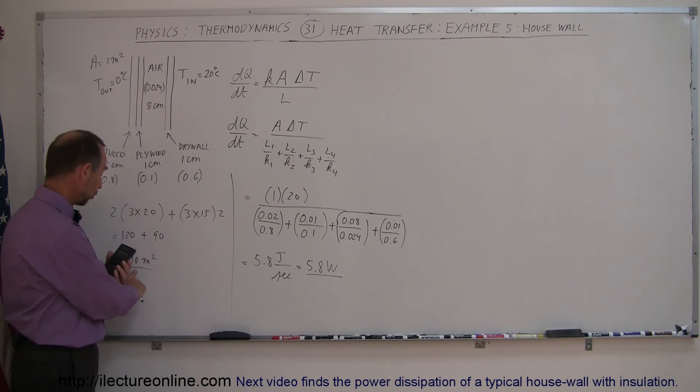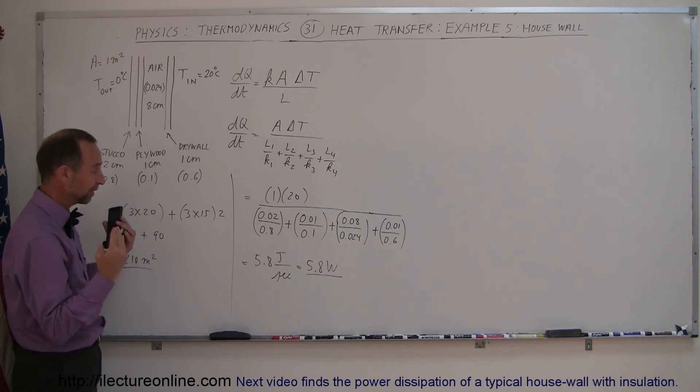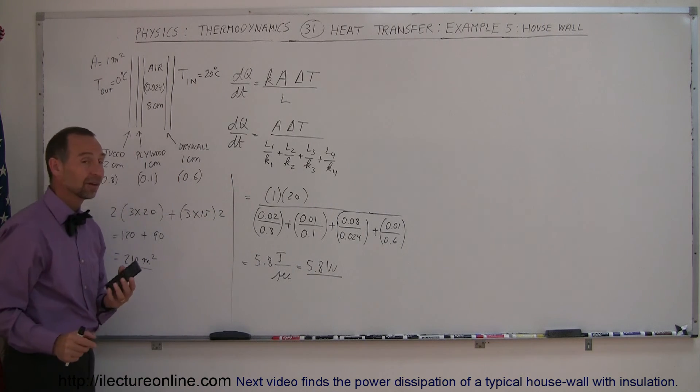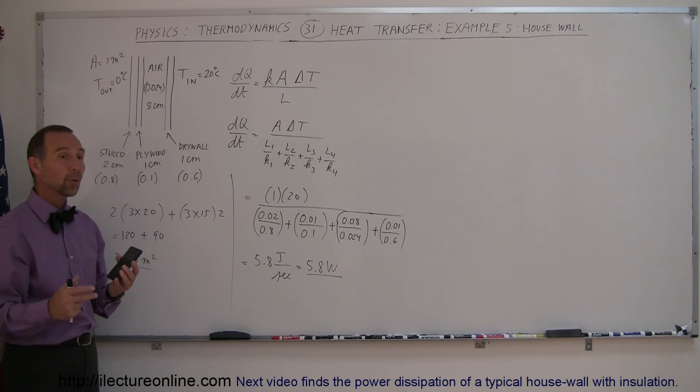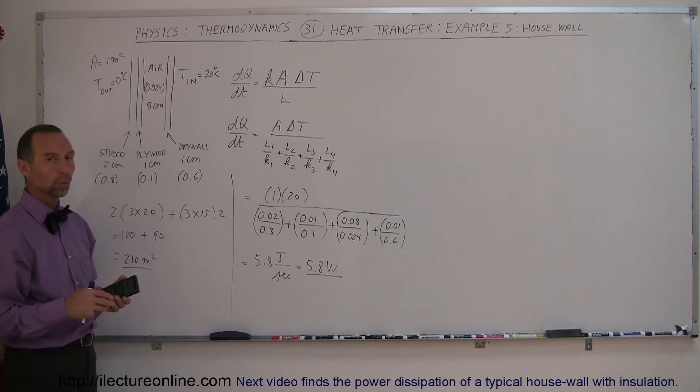All right, so if we multiply the total area of the house, that's not including the roof, not including the floor, simply the walls, 210 square meters times about 6 watts per square meter, 6 times that, that would be 1,200 watts of heat being lost to the walls on a cool winter day.